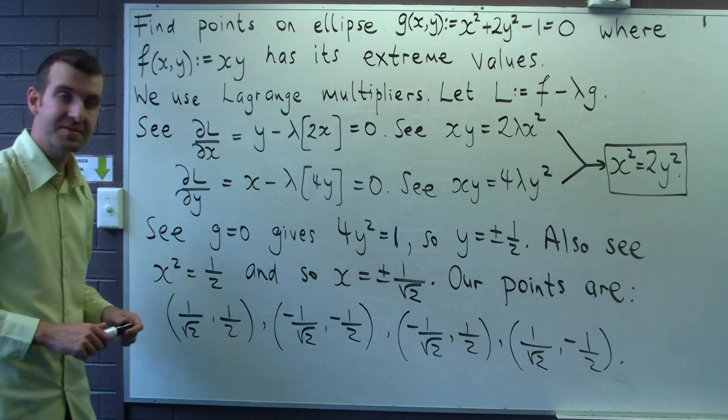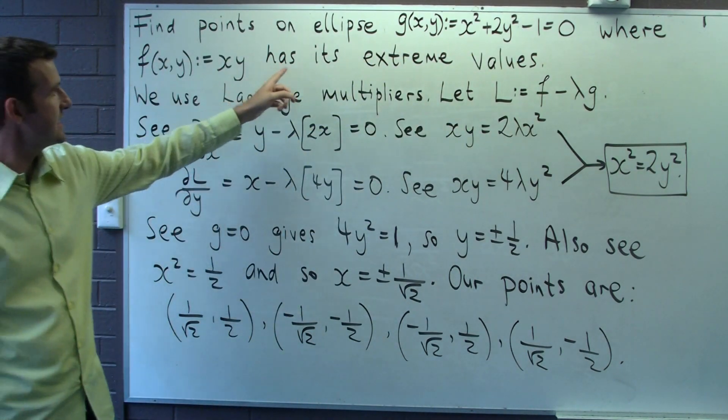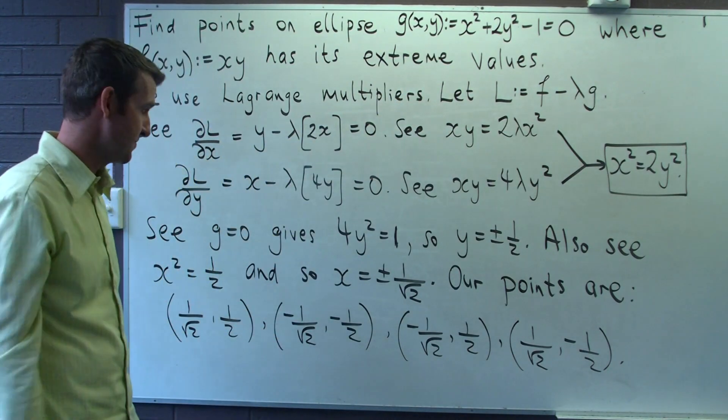G equals zero, where this particular function has its extreme values. By extreme values, of course, we mean f has a maximum or a minimum value.